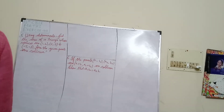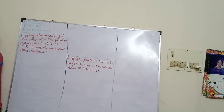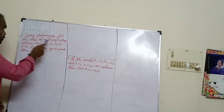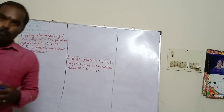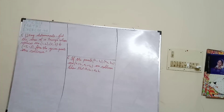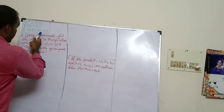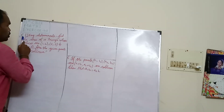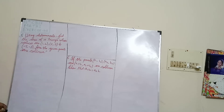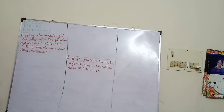Very good evening, dear everybody. Now we are going to discuss the 5th sum in Exercise 4.2, Tamil Nadu Standard 12 CBSE Mathematics, Exercise 4.2, 5th sum. Using determinants, find the area of a triangle whose vertices are (1,4), (2,3) and (-5,-3). Are the given points collinear?